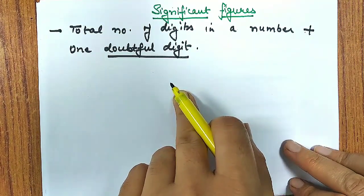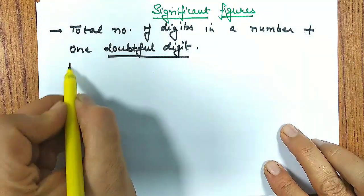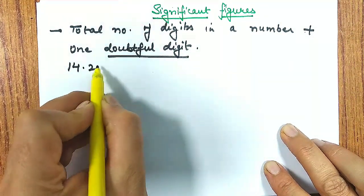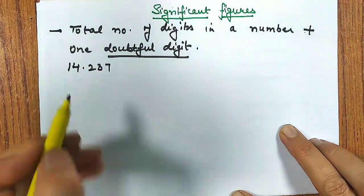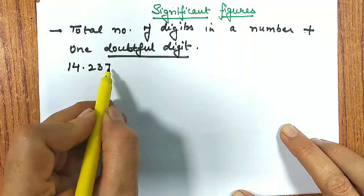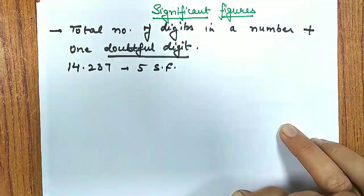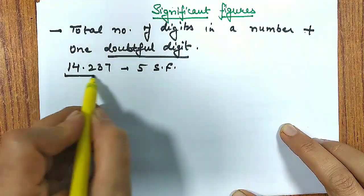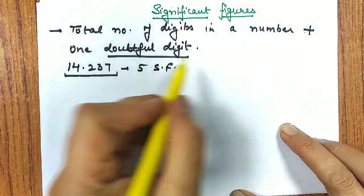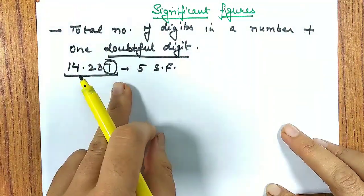So what is significant figure? When we talk about significant figure, basically we say it is total number of digits. What digits? It is total number of digits in a number plus one doubtful digit in it.